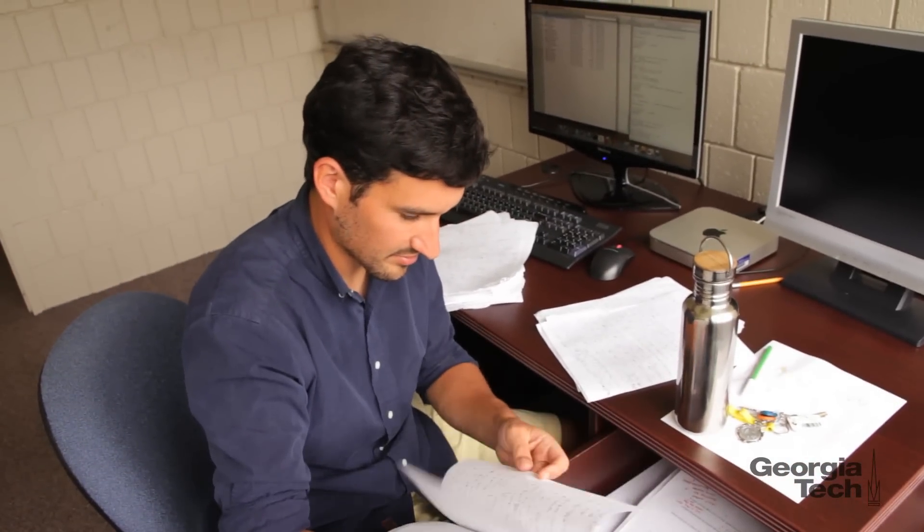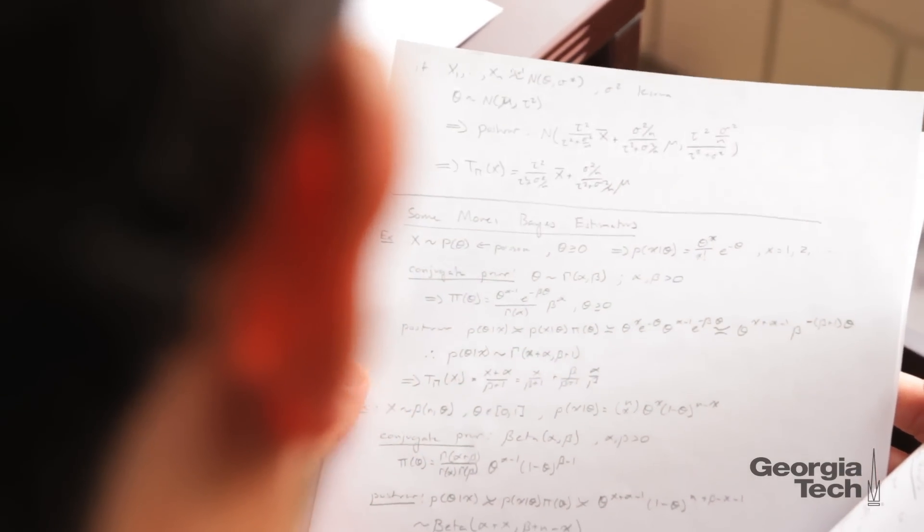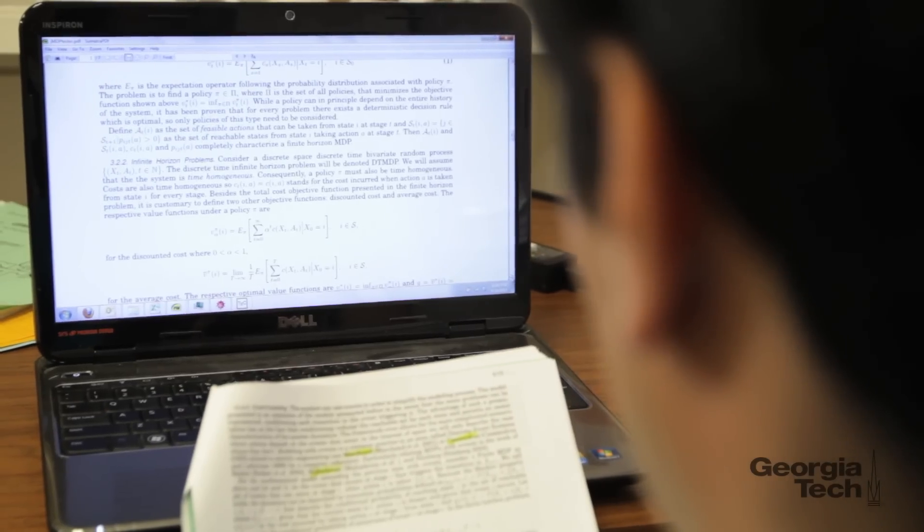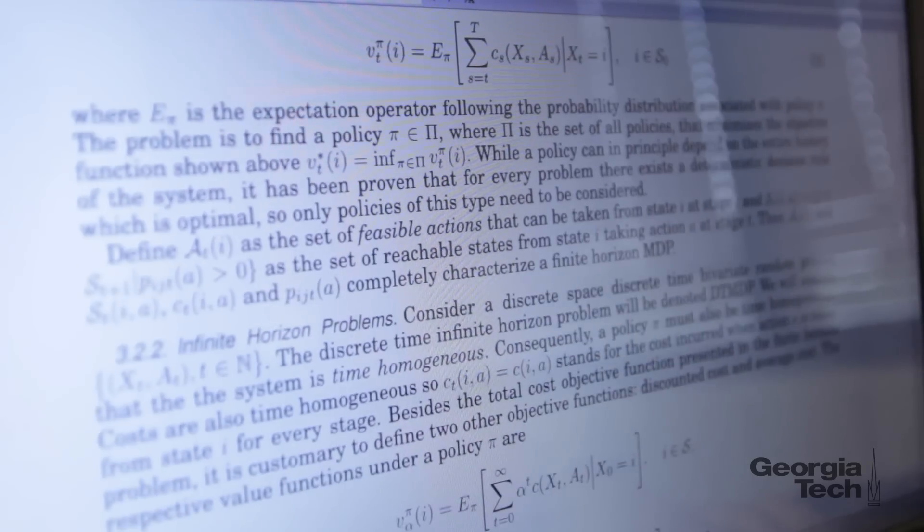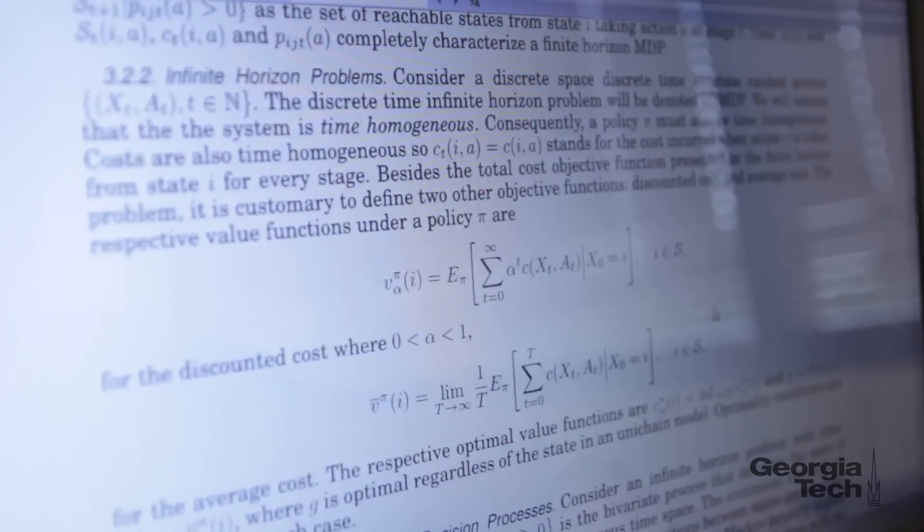With an industrial engineering degree, students can go on to do many types of things. They can work in the government sector or the non-governmental organizational sector. They can work in healthcare or transportation or manufacturing or in consulting as many of our students do.